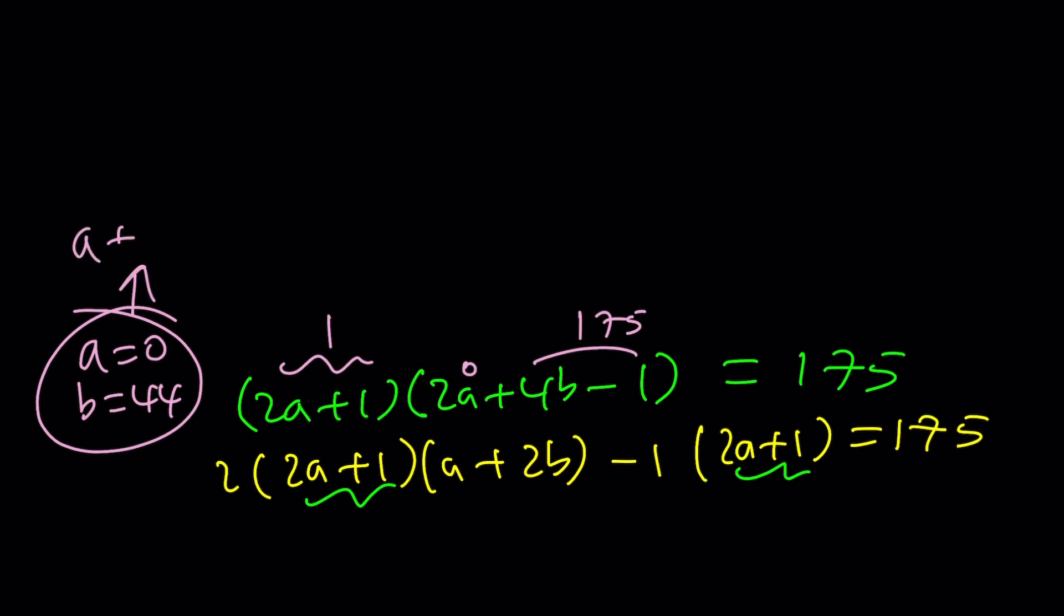And from here, a + b will be 44. But that's not the only value, because there are other factors of 175, such as, is it divisible by 3? Hmm, I don't think so, because 1 + 5 is 6, but 7 isn't divisible. So 3 is not going to work. Maybe 5.